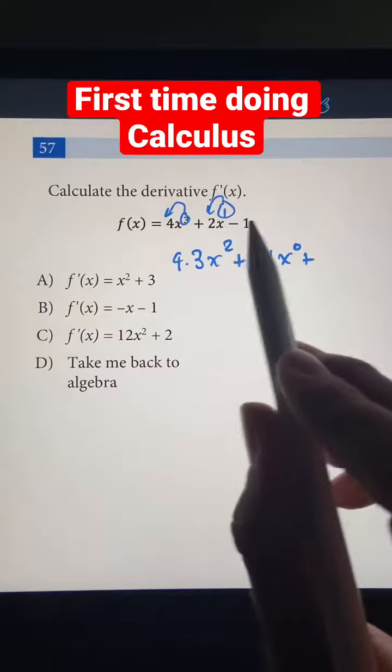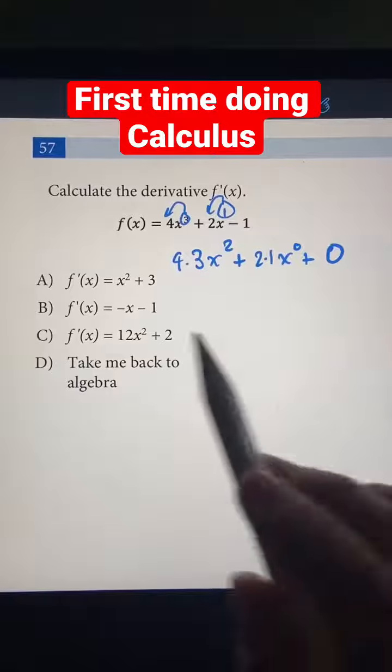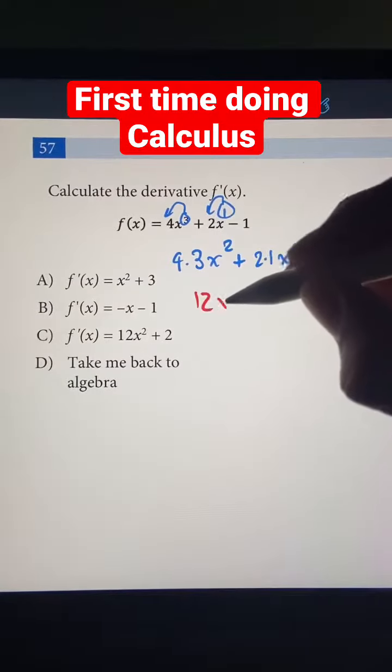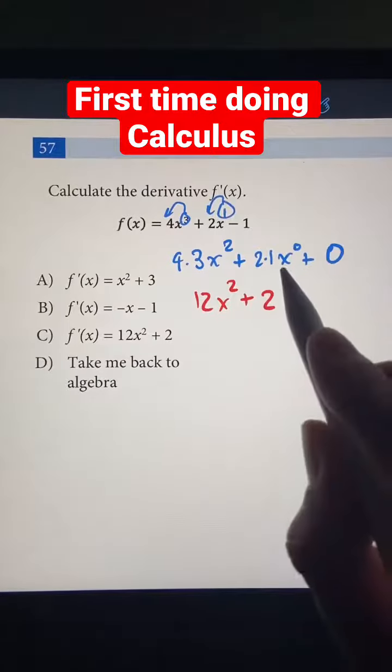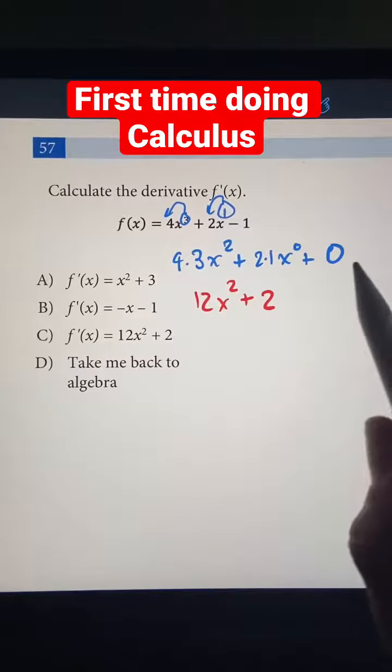If you're taking the derivative of any constant, it's just 0. So we can put a plus 0 at the end. Now let's simplify. 4 times 3 equals 12. So now we have 12x² plus 2 times 1, which is 2, times x⁰, which is just 1. So I'm going to leave it like this, and plus 0 is nothing.